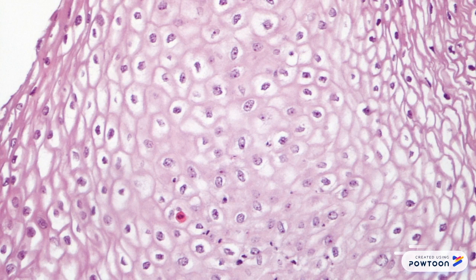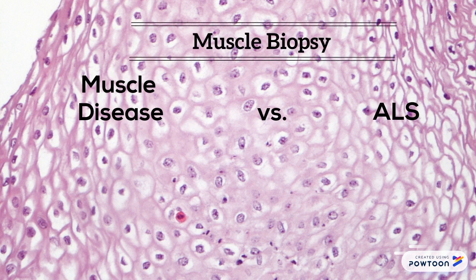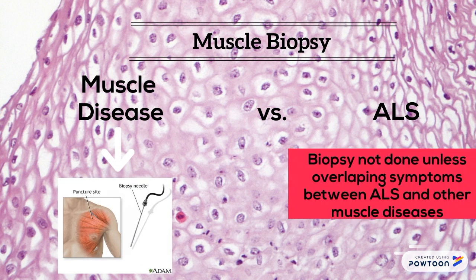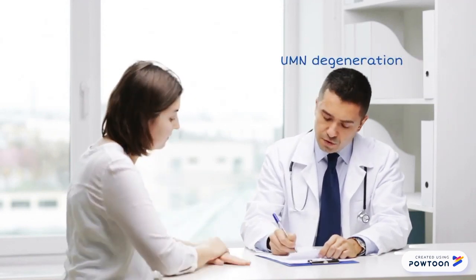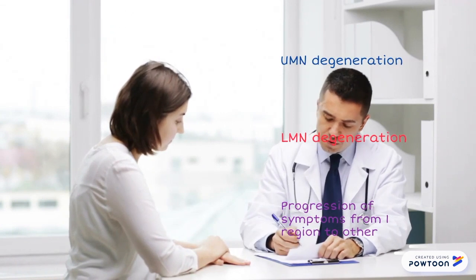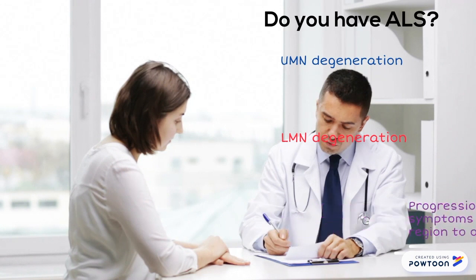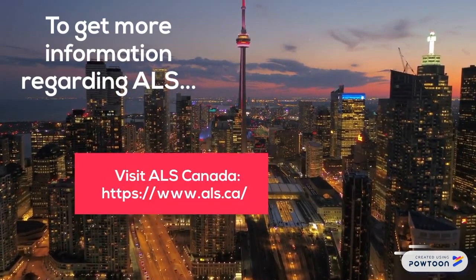If the doctor is more convinced that an individual has a muscle disease rather than ALS, they will recommend a muscle biopsy, during which a part of the muscle is removed and analyzed in a lab. Biopsies are not typically done unless there is overlapping in symptoms observed in other diseases, and as such this is used as a last resort in the diagnosis process. In conclusion, by meeting each of the points in the aforementioned criteria, a physician is able to diagnose an individual with ALS. The patient will then receive recommended treatment to help reduce symptom severity. For more information, please visit ALS Canada.